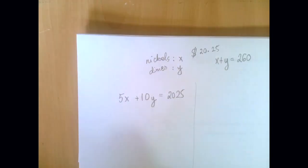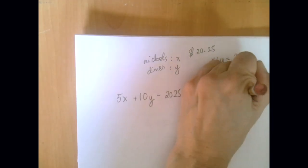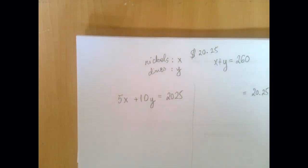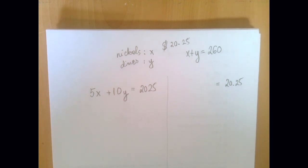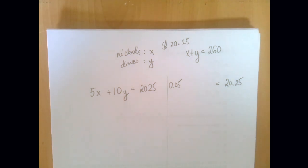The second option is to go with dollars. So then the right-hand side is clearly 20.25. On the other hand, we have to express the left-hand side in dollars. So a nickel is worth how many dollars? 0.05, 5 hundredths, right? 5 pennies.